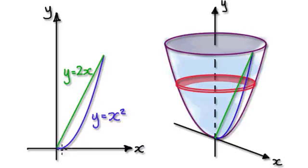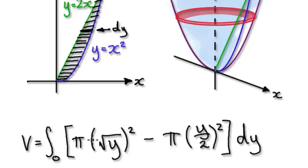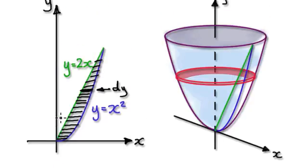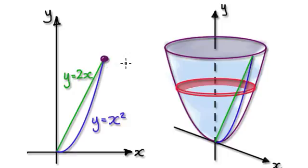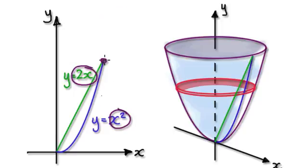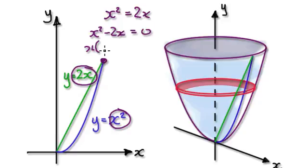To work out the volume of this, we're going to sum up all the washers in the horizontal direction. Let's look at one particular washer here. The thickness of this will be dy, so you're integrating from 0 to whatever is up here. We need to know the upper limit, so to find that point, set the two equations equal: x squared equals 2x. Factorize to get x(x minus 2), so ignoring x equals 0, we're interested in x equals 2.